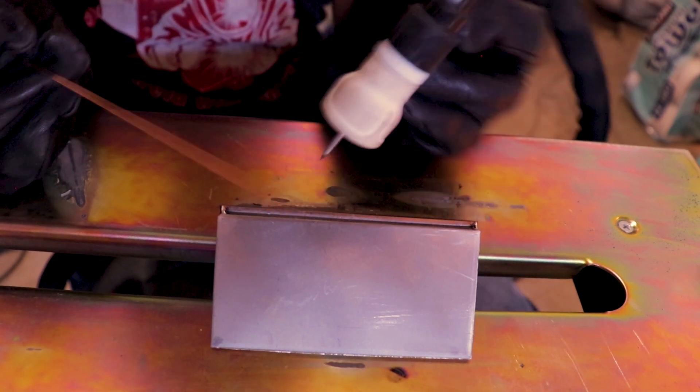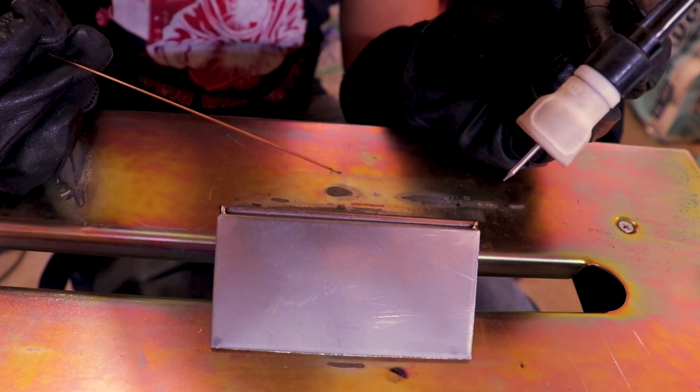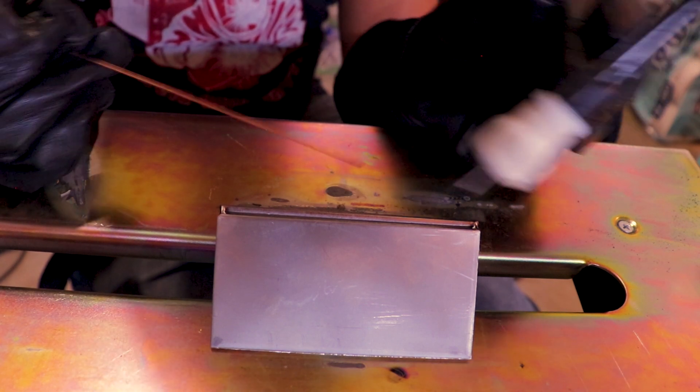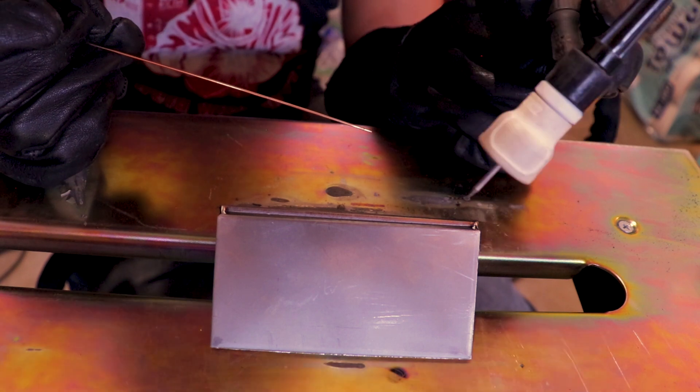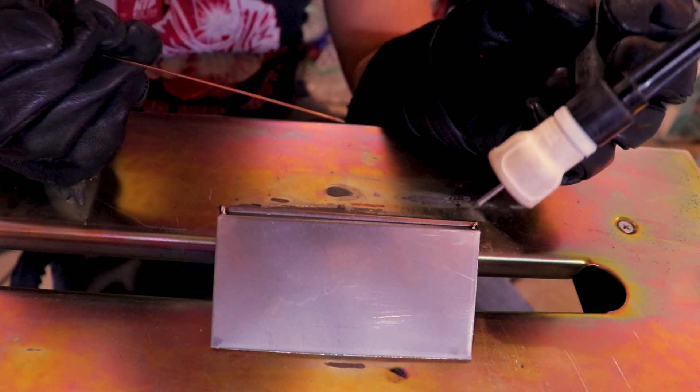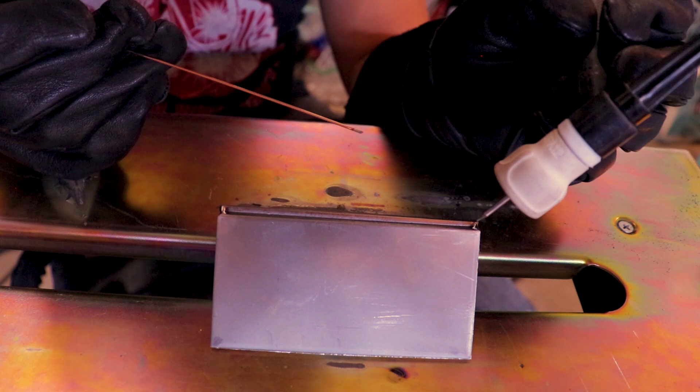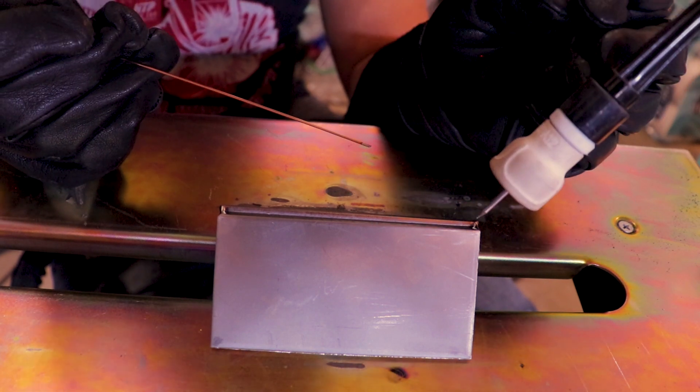So since we're doing a root pass and then a cap, we want the least amount of heat into it as possible. So we're going to run our root real fast, let the part cool completely. You'll have way better success if you just let it sit and let it cool down.